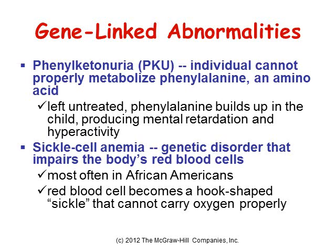Sickle cell anemia is a genetic disorder passed down through families in which red blood cells form an abnormal sickle or crescent shape. It is caused by an abnormal type of hemoglobin called hemoglobin S, a protein inside red blood cells that carries oxygen. Hemoglobin S changes the shape of red blood cells into crescents or sickles, and these fragile cells deliver less oxygen to the body's tissues. They can also get stuck in small blood vessels and break into pieces that interrupt healthy blood flow, further decreasing oxygen delivery.